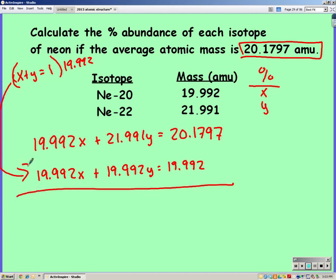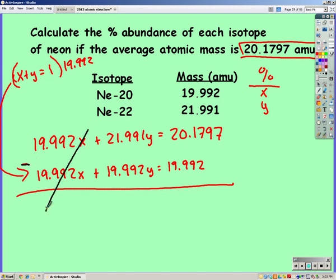Subtracting, my first ones are going to cancel out. 21.991 minus 19.992 gives me 1.999y. 20.1797 minus 19.992 gives me 0.1877.